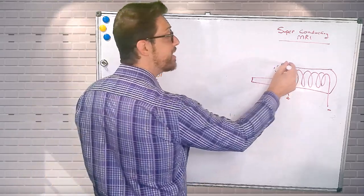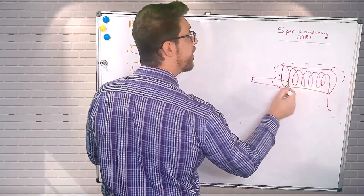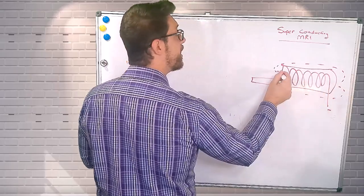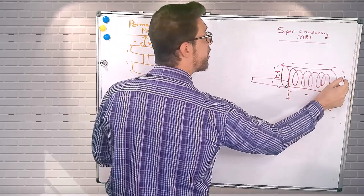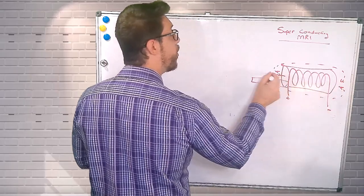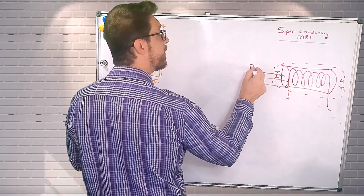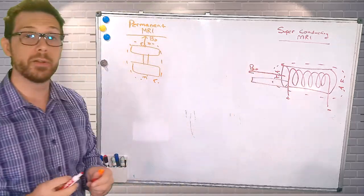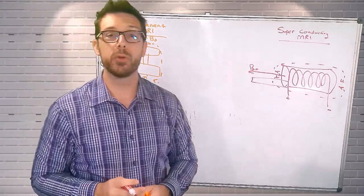What we notice is we have these lines of flux that travel in a different orientation. They're going to travel horizontally. So we have a horizontal B0 with superconducting MR units.